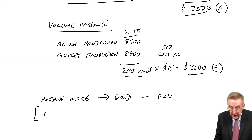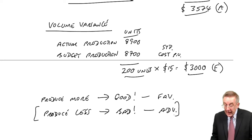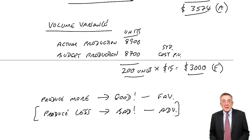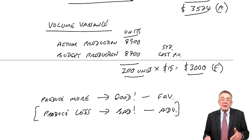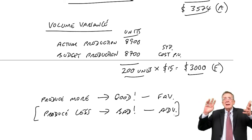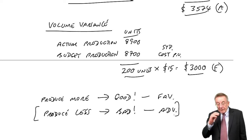I say, oh, if we produce more, that's good. And therefore, the variance is favourable. Whereas, if we'd produce less, I say, producing less is bad, and it would be adverse. Here, we had produced more. It's good. It's favourable. Now, I say that's a little bit of a cheap way of looking at it, but it always works. And I think, you may be different, but I think it's quicker than thinking through the logic.